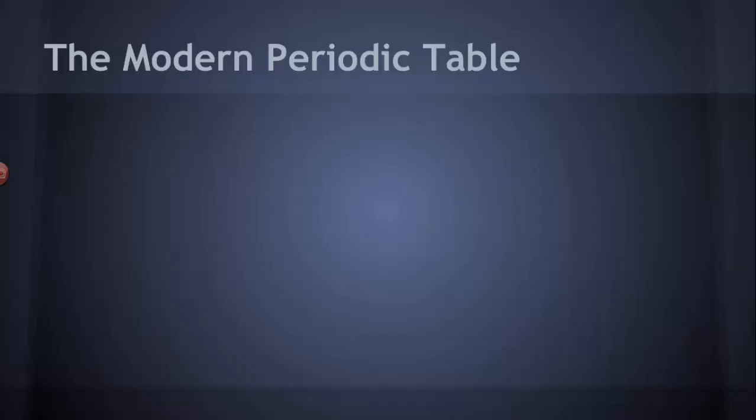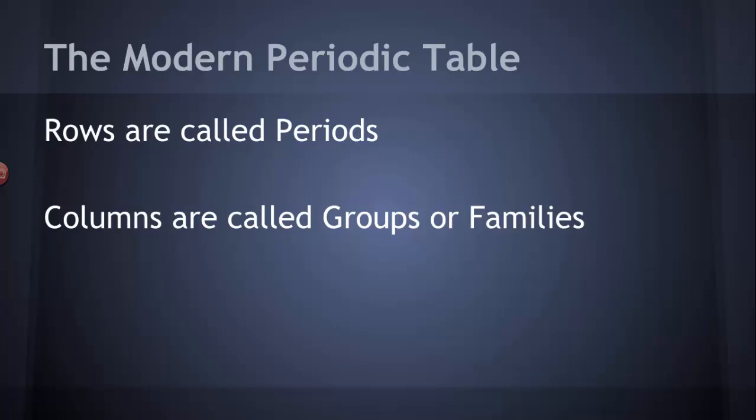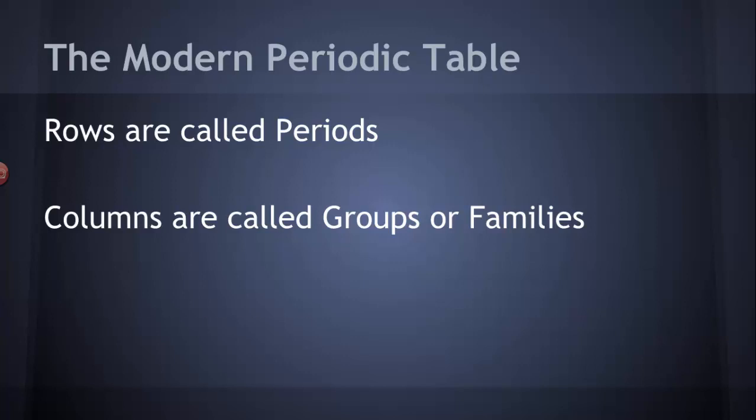There are some things about the table that we need to become familiar with. We don't call them rows or columns. We call the rows periods, hence the name periodic table, and that has to do with the periodic law. We call the columns groups or families. Just like members of a family share something in common, the elements in a particular group share something in common. Since we arranged the elements by atomic number, we're able to see patterns in their properties.